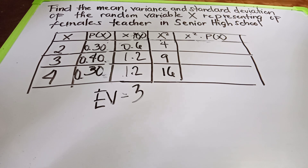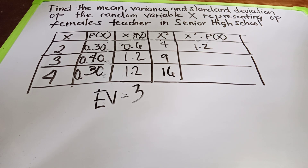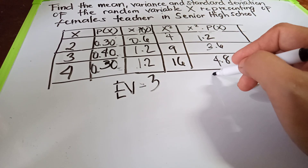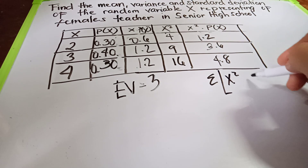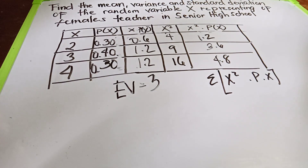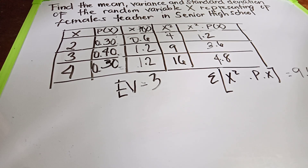For x²·P(x): four times 0.30 gives 1.2; nine times 0.40 gives 3.6; and sixteen times 0.30 gives 4.8. Adding the summation of x²·P(x): 1.2 plus 3.6 plus 4.8 gives us a value of 9.6.